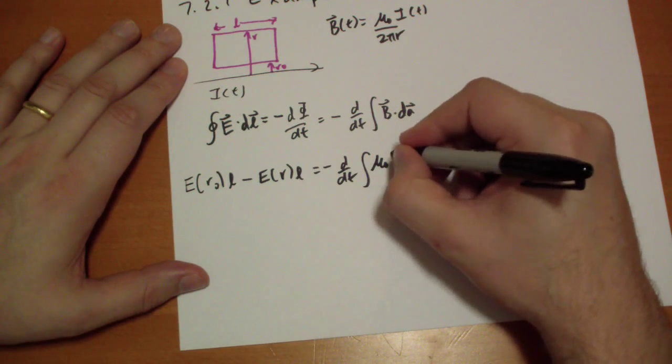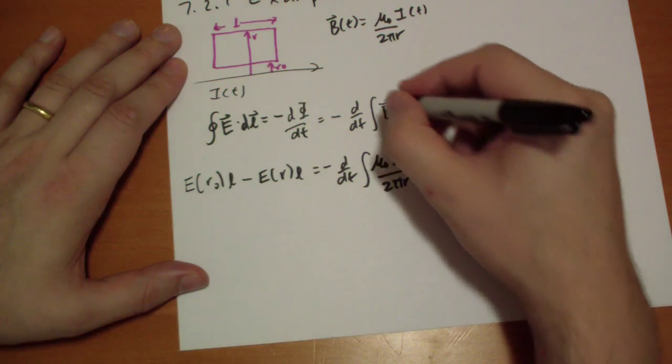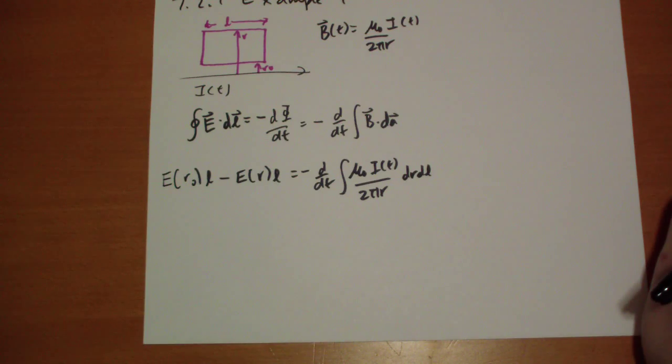And that is going to be equal to minus d by dt of the integral of B, mu naught I which varies according to t over 2 pi r, and the dA vector is going to be dr dl because we're in Cartesian coordinates.